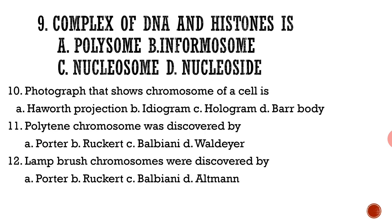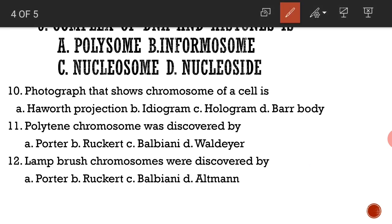The complex of DNA and histones is called a nucleosome. A photograph that shows the chromosomes of a cell is called an ideogram. Polytene chromosomes were discovered by Balbiani, and lampbrush chromosomes were discovered by Ruket.